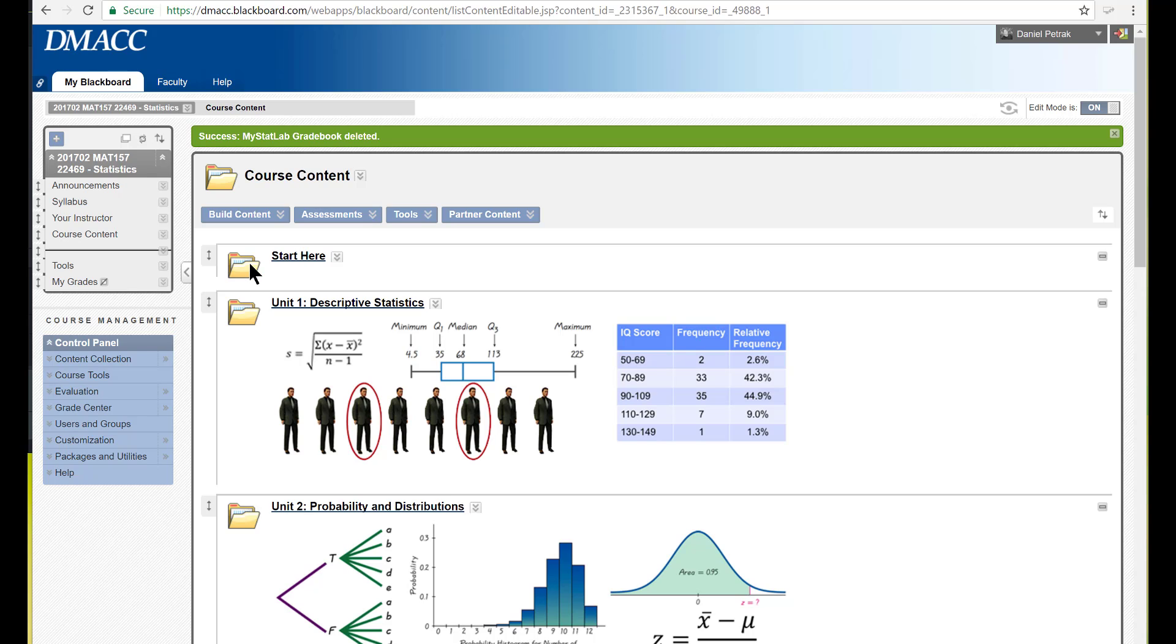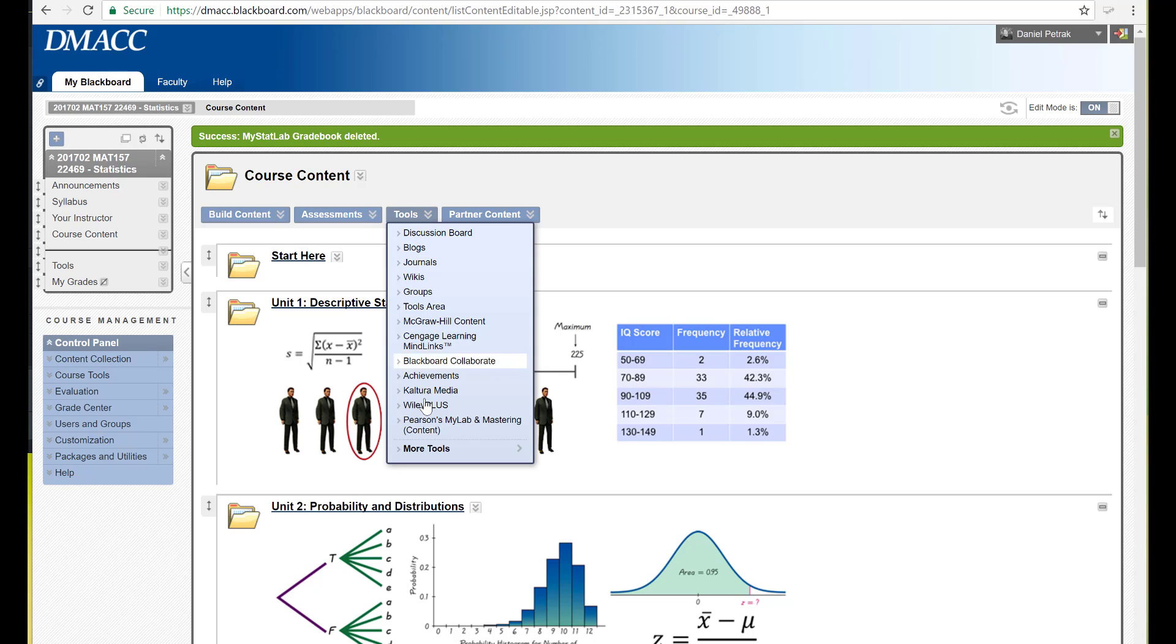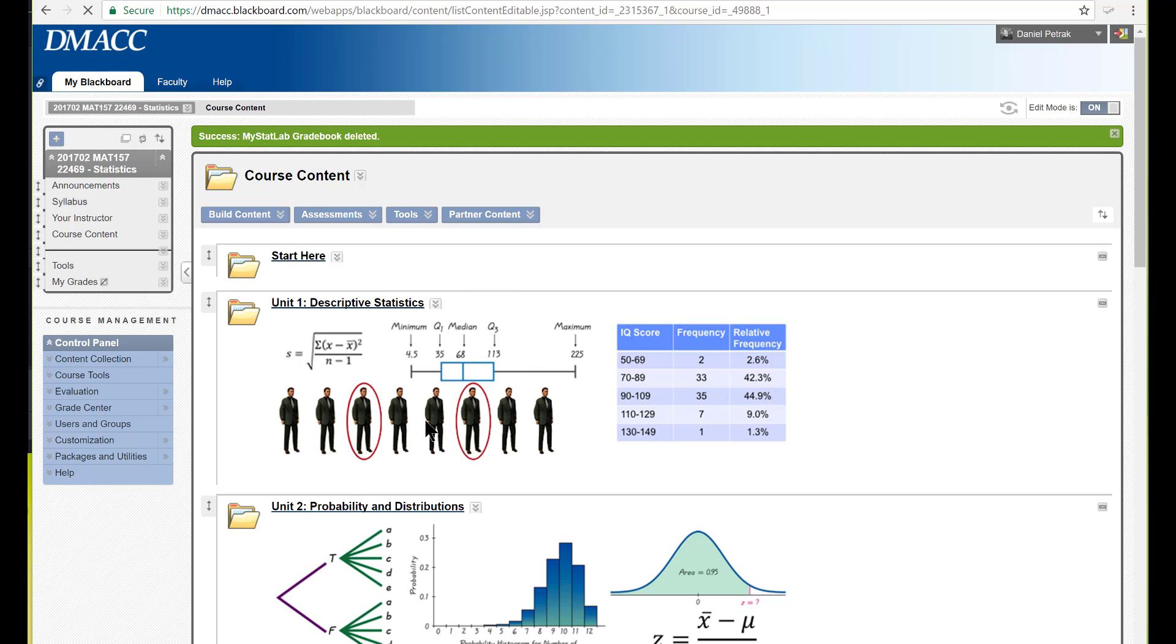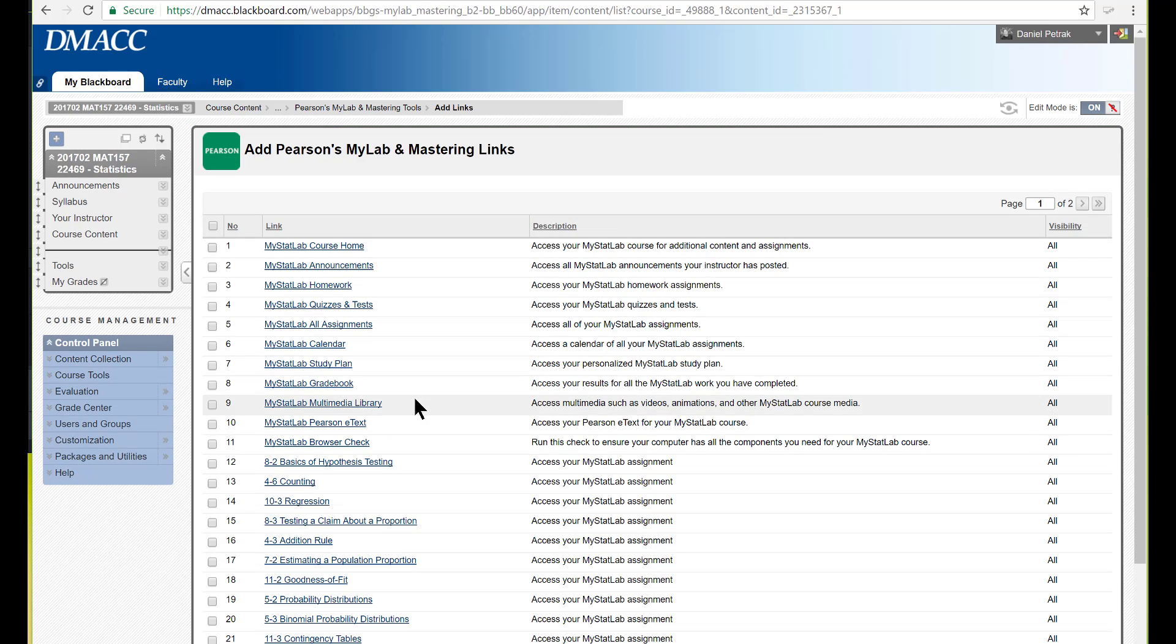And the way I do this is I go to Tools, and I go to Pearson My Lab and Mastering, and I just go ahead and add the gradebook to my course content. So I just click My Stat Lab Gradebook.